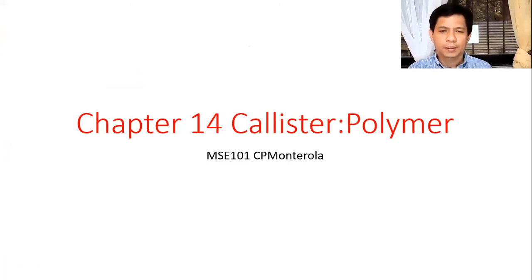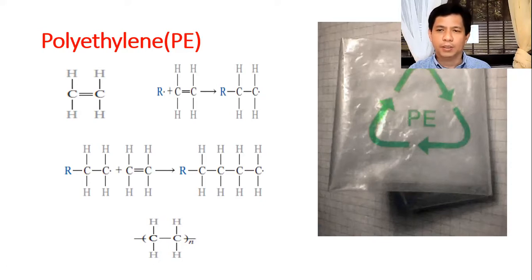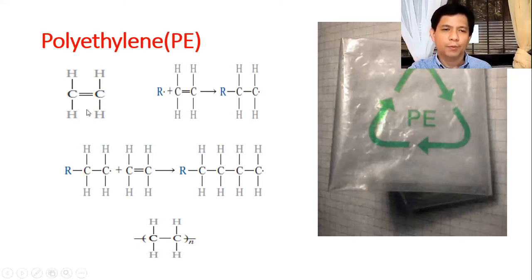You can find the materials on this discussion in Chapter 14 of Callister. Let's take a look at polyethylene. Polyethylene is the most common plastic — you'll know it's polyethylene if you see the sign PE on any part of the bottle or plastic. The monomer of polyethylene is ethylene, which is composed of two carbons and four hydrogens and contains a double bond.